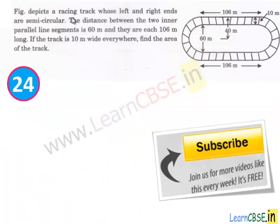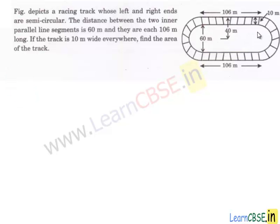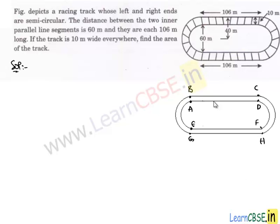In this question, we have a racing track whose left and right ends are semicircular. The distance between the two inner parallel line segments is 60 meters, the length of each segment is 106 meters, and the width of track is 10 meters. We have to find the area of the track — the shaded region. The track contains two equal rectangles ABCD and EFGH, with length 106 m and breadth 10 m.